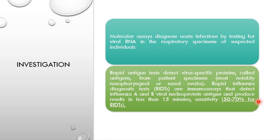For investigation, molecular assays diagnose acute infections by testing for RNA in respiratory specimens. Rapid antigen tests detect virus-specific proteins called antigens from the patient specimen. A rapid influenza diagnostic test is available and takes only a few minutes in the hospital without requiring a full lab. It detects influenza A and B viral nucleoprotein antigens and produces results in less than 15 minutes, with a sensitivity of about 50 to 70 percent.